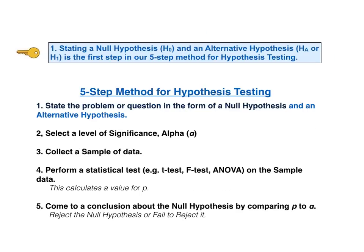This five-step method will be explained in detail in a separate video devoted to hypothesis testing. Note that the alternative hypothesis is featured in step one, which says state the problem or question in the form of a null hypothesis and an alternative hypothesis. Now, experts disagree on whether an alternative hypothesis should be used. It is included here because, as we'll show later, it is very useful in one-tailed tests. In fact, for one-tailed tests, we start the alternative hypothesis first and derive the null hypothesis from the alternative hypothesis.